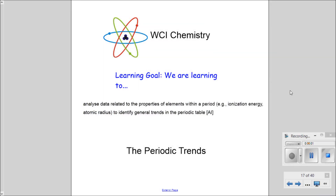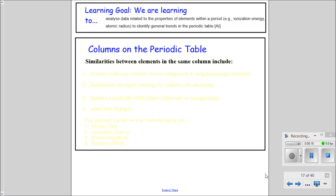Welcome grade 11 chemistry students. Today we're learning about how to analyze data related to properties of elements within a period. The learning goal is to understand what the periodic trends are. We can talk about the trend on the columns of a periodic table.